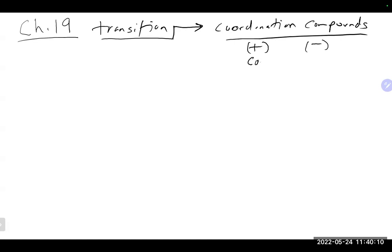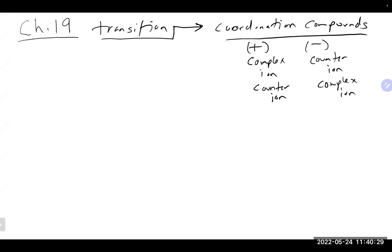Remember that either the complex ion or the counter ion can carry the positive or negative charge. You can have a complex ion that is positive and a counter ion that is negative to balance it out to zero, or vice versa. Just like an ionic compound, we use the counter ion to get ourselves to zero overall charge, and we always go with the positive guy first followed by the negative guy.